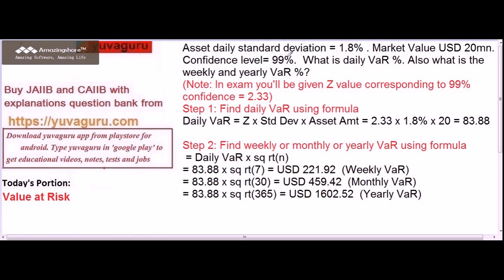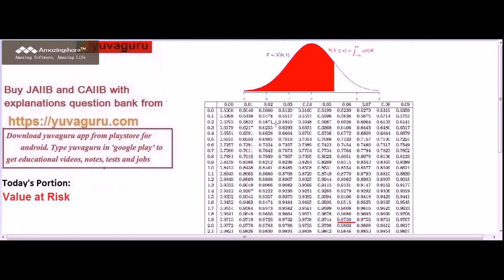The confidence level of 99% is to be converted into the Z-value. This is done using the normal distribution table. You won't be given the normal table in the exam, but you will be given the value — for 99% confidence, it is 2.33. I'll show you in this problem how to find that. Here, this is a normal distribution table.